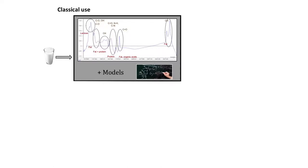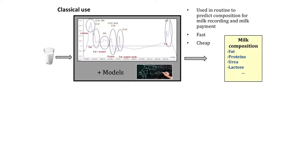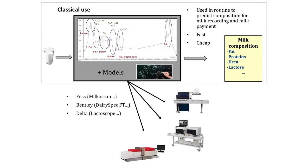The spectra shows both the fat wavelength region and the protein wavelength region at the same time. The machines used in milking laboratories are essentially a black box: they use this spectrum internally with models to predict milk composition parameters like fat, protein, urea, and lactose. This is used routinely for milk payment and milk recording. The technique is very fast and cheap. The main instrument brands are MilkoScan from FOSS, DairySpec from Bentley, and the Lactoscope from Delta Instruments.